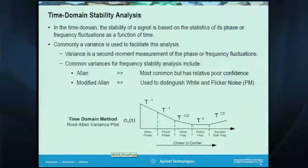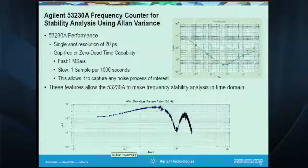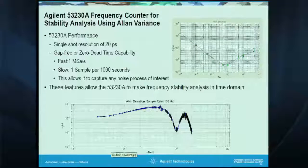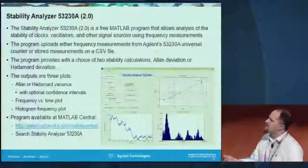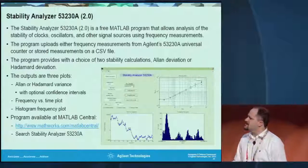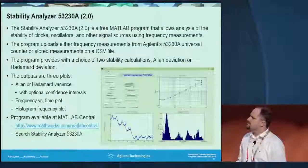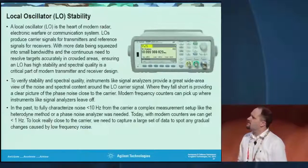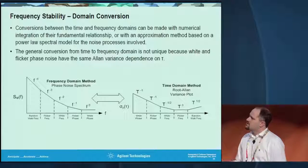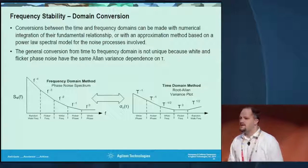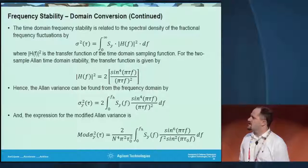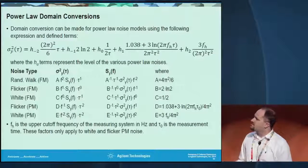In the time domain, there are two main types: the Allan variance and the modified Allan variance, which is most common but has limited confidence intervals. We also have white noise and flicker noise characterization. We have a new signal stability analyzer application using a frequency counter that performs this measurement — available on MATLAB Central. Using MATLAB with one of these frequency counters, you can also do the same thing in the digital domain and correlate the time domain to the frequency domain measurement, with more detail available in the slide set.